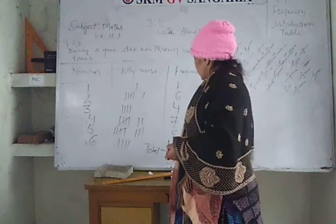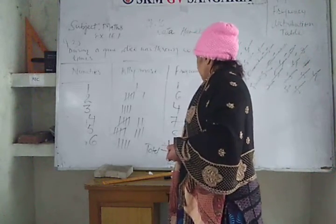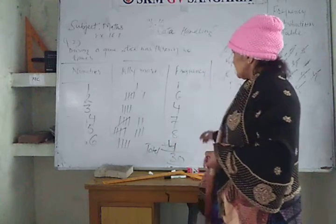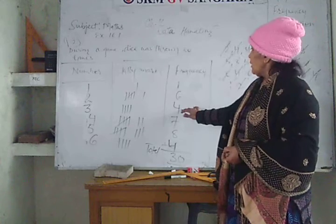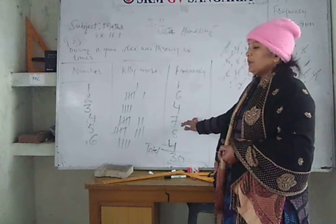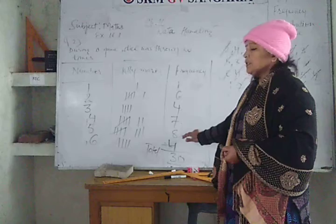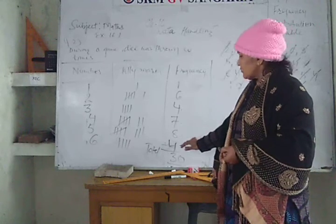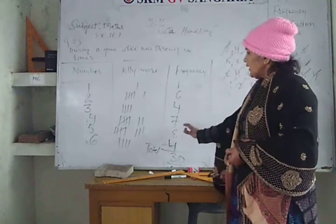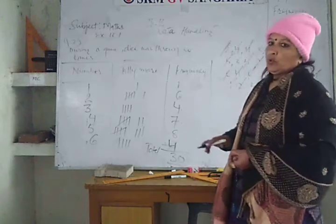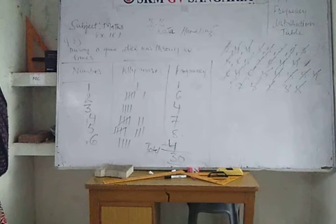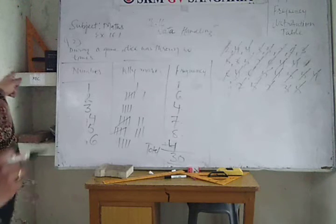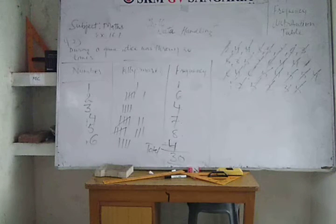So total — when you make the total, it will be 30. It is 30: 1 plus 6 is 7, plus 4 is 11, plus 7 is 18, plus 8 is 26, plus 4 is 30. So you will have to check the total. Whenever you count the numbers, you should start from the lowest number up to the largest number.